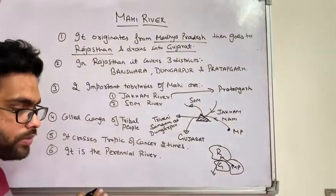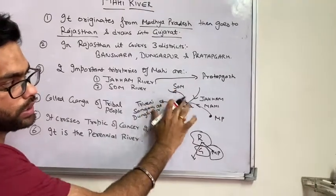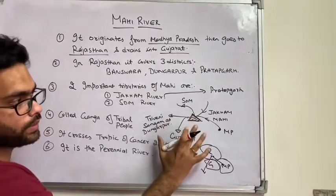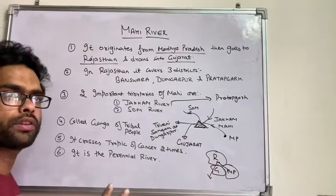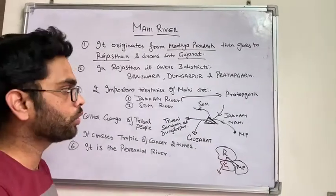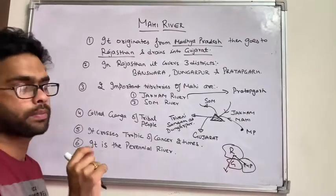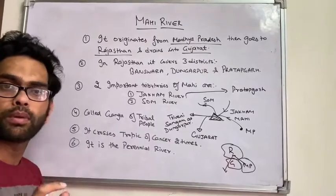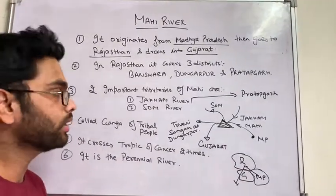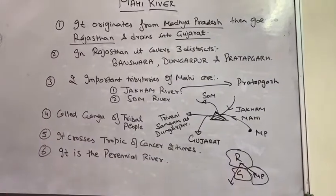The Som river originates from Udaipur. The 2 important tributaries of the Mahi are Jaakham and Som — these are very important and frequently asked in exams.